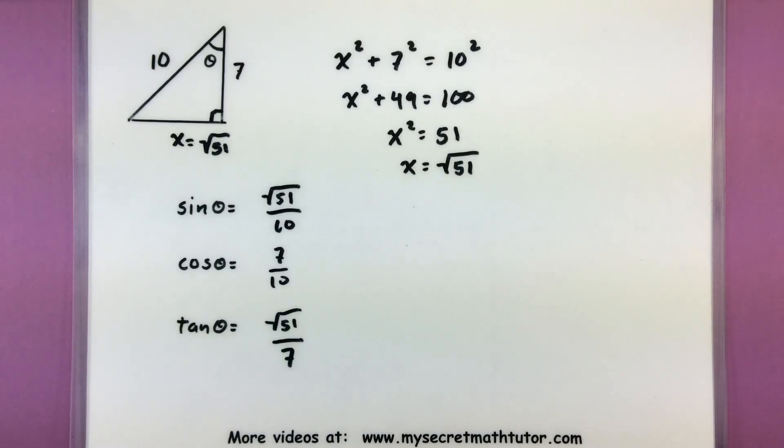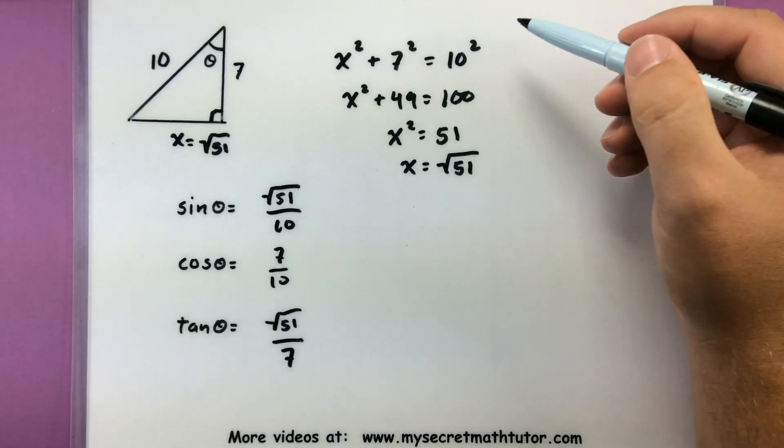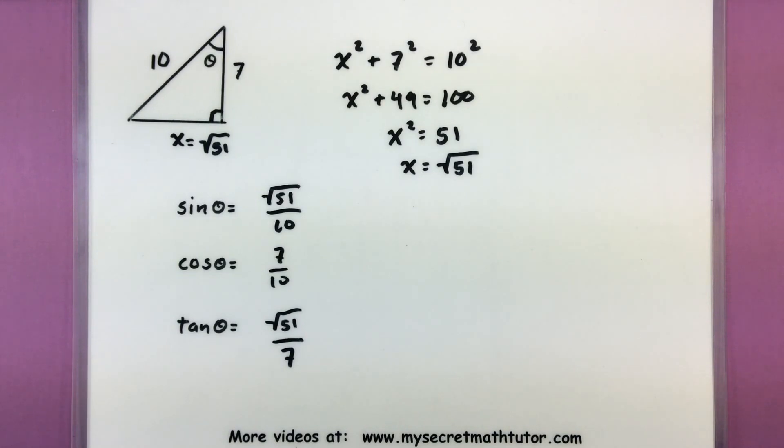Alright, so even if you do have a missing side in a right triangle, you can use that Pythagorean theorem to get your foot in the door and find all of your ratios. If you'd like to see some more videos, please visit MySecretMathTutor.com. We'll see you soon.